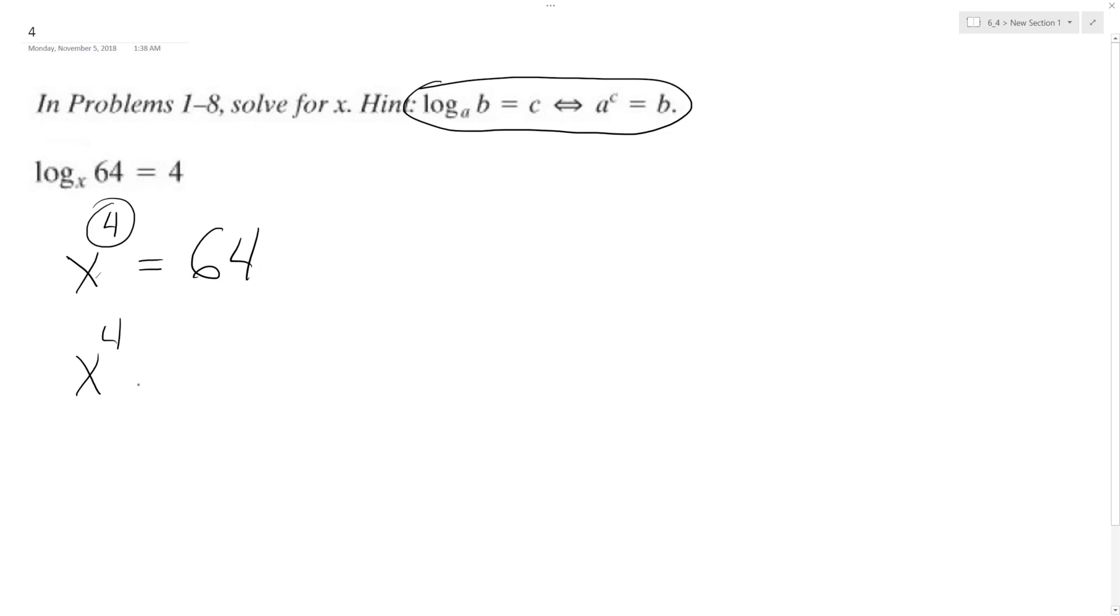So x to the 4th is equal to, well 64 is the same thing as 4 raised to the 3rd. We're not quite there yet, but what we can do is, that's pretty close, x raised to the 4th and then...